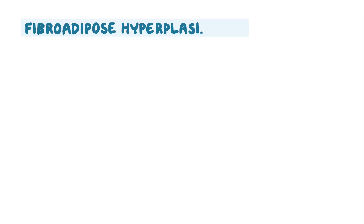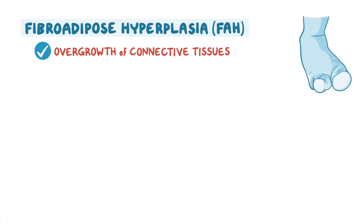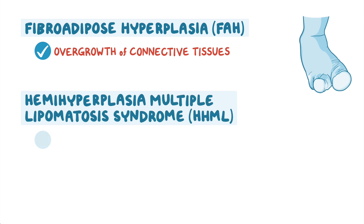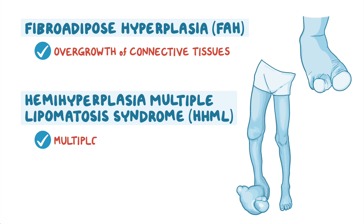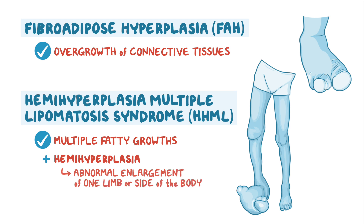Fibroadipose hyperplasia, or FAH, results from overgrowth of connective tissues. In a related disorder, hemihyperplasia multiple lipomatosis syndrome, or HHML, is characterized by multiple fatty growths, along with hemihyperplasia, which is abnormal enlargement of one limb or one side of the body.